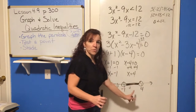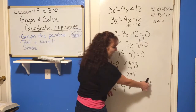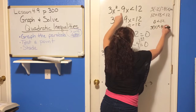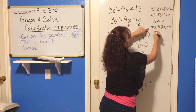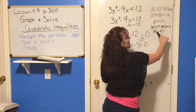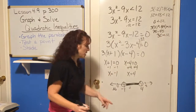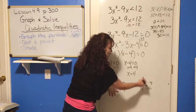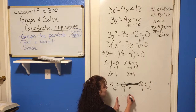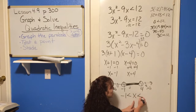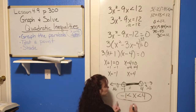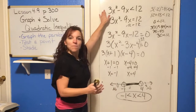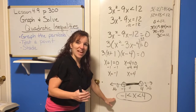Testing x = 5 (right of 4): 3 times 25 minus 9 times 5 gives 75 minus 45 = 30, and 30 is not less than 12 — false. So the statement is true only between negative 1 and 4. The algebraic solution is written as negative 1 is less than x is less than 4. All x-values in this interval will make the original inequality true.